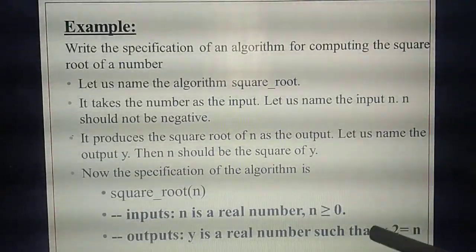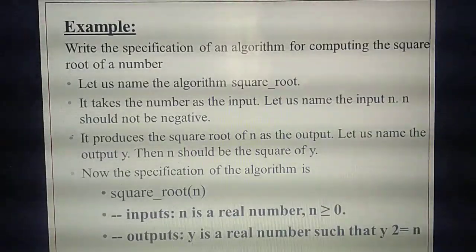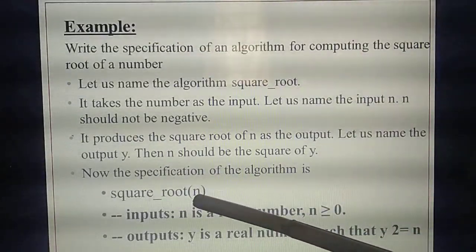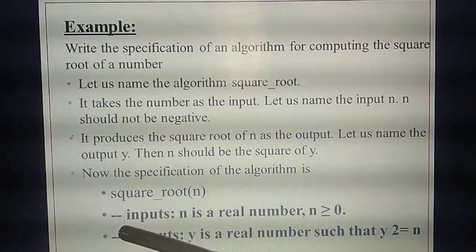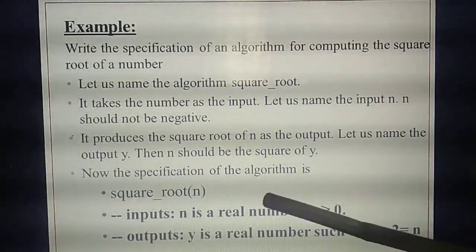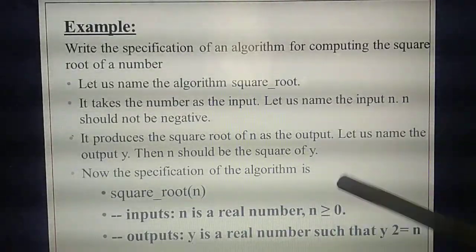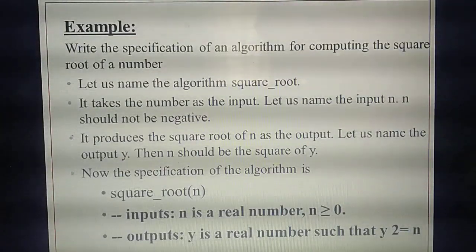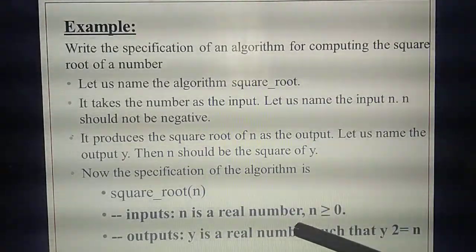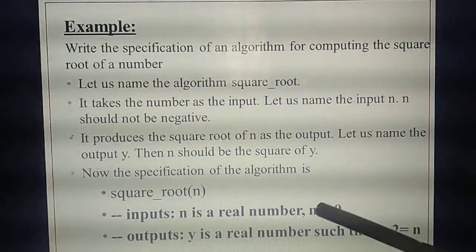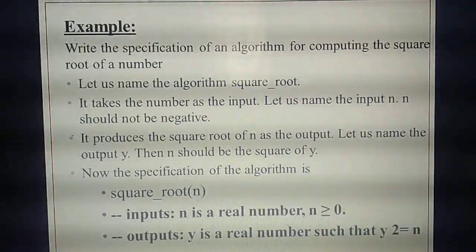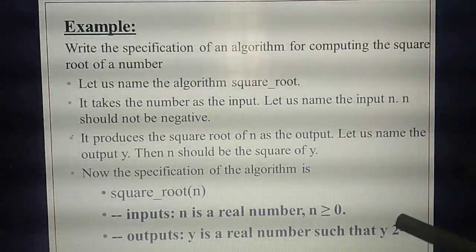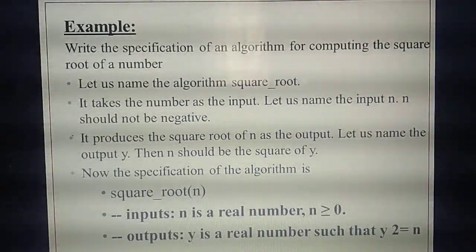So the formula is Y² = N. This is the desired input-output relation. You are finding the square root of a number. Input variable N, output variable Y. You write in both English and mathematical notation: 'N is a real number, N ≥ 0' and 'Y is a real number such that Y² = N.' This is the example for specification.